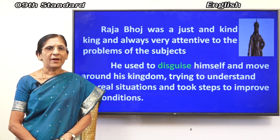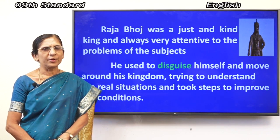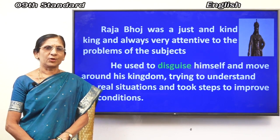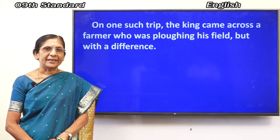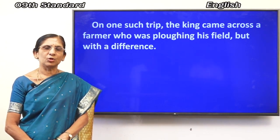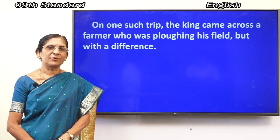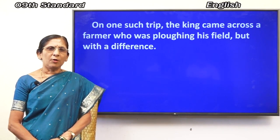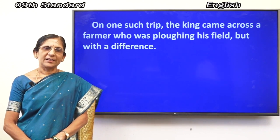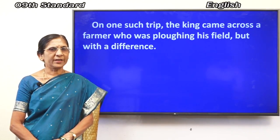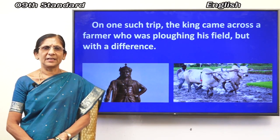Raja Boj used to disguise himself and move around his kingdom, trying to understand the real situations, and took steps to improve conditions. Disguise means changing one's appearance — the king used to wear ordinary, common clothes instead of royal clothes. On one such trip, the king came across a farmer who was plowing his field, but with a great difference.